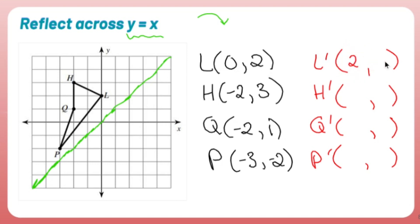Zero, two becomes two, zero. Negative two, three becomes three, negative two. Negative two, one becomes one, negative two. And negative three, negative two becomes negative two, negative three. All I did was flip the points.